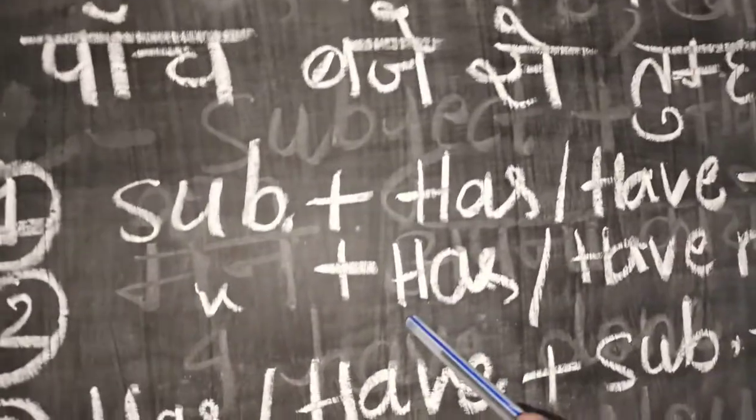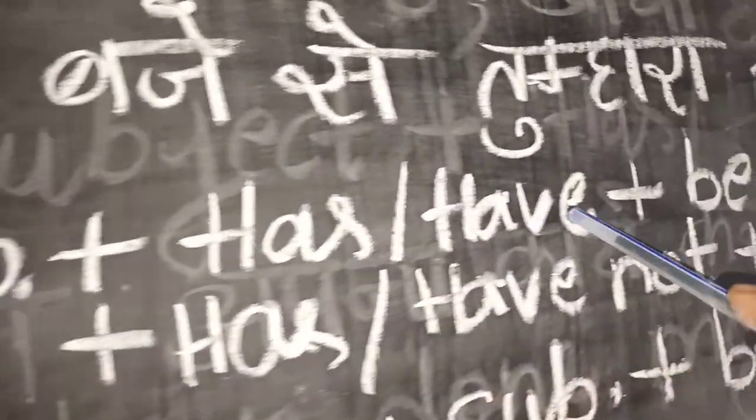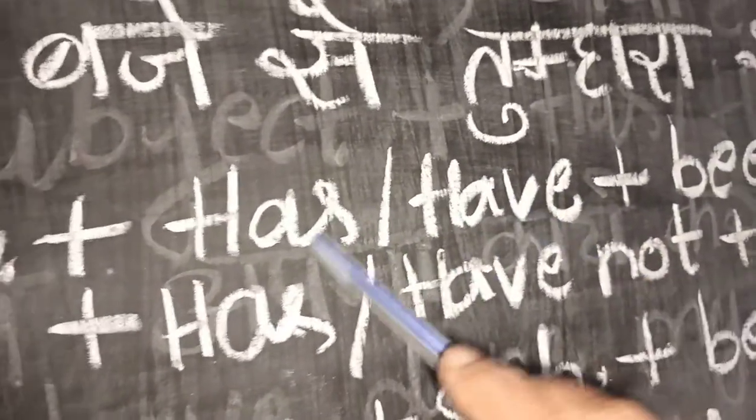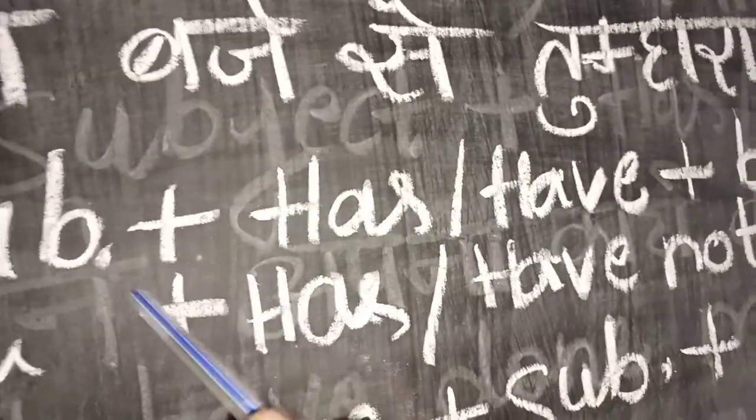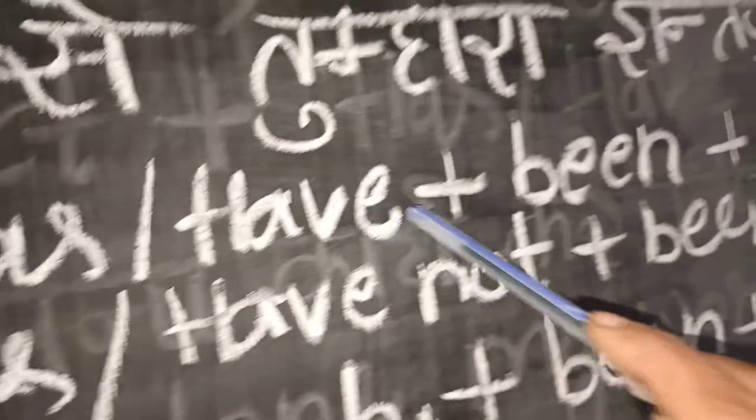For Perfect Continuous, you will notice here, first of all you will write down subject, then has or have. You will choose one of the helping verbs according to the number of the subject. Subject singular takes has, plural takes have. Then been,